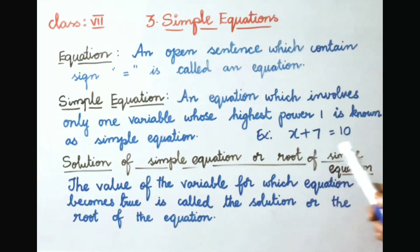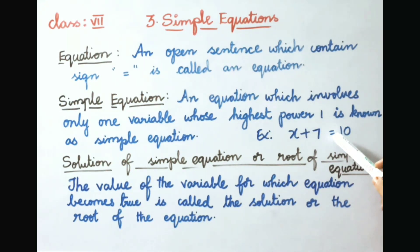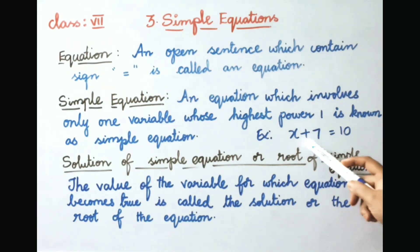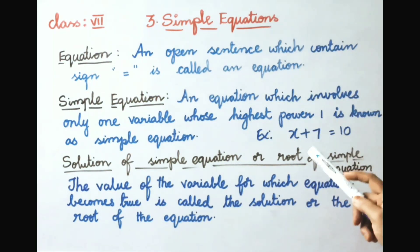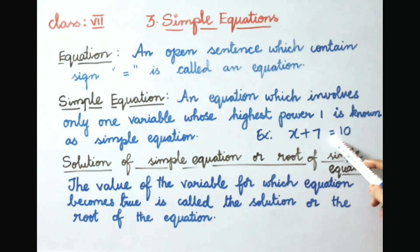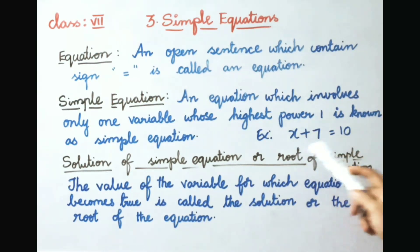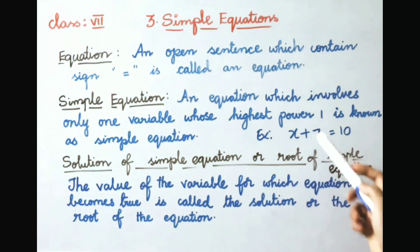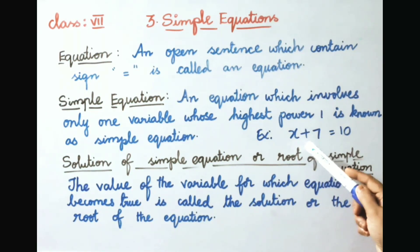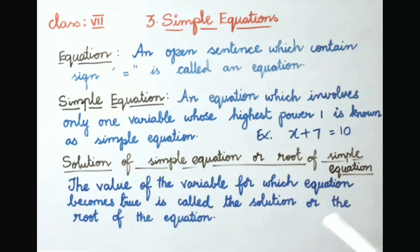For example, x plus 7 equals 10. An equation must contain an equal to sign and must have one variable having power 1. Here the variable is x, its power is 1, and an equal to sign is also present, so it is a simple equation. The solution is the value of x that satisfies the equation — that value becomes the solution or root of the equation.